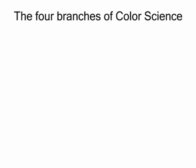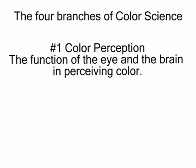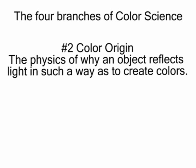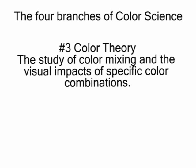There are four main branches of color science. The first study is the perception of color by the human eye and the brain. The second study is the origin of color in materials, including the physics of an object in its environment.